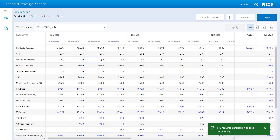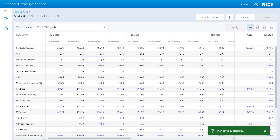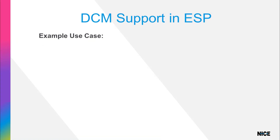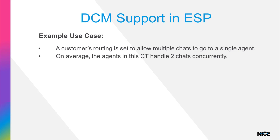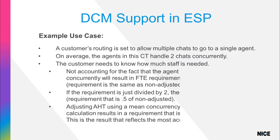Click Save or Save As to save all updates to the plan. With the new DCM support in ESP, you can change the mean concurrency for CTs and see how the changes affect staffing levels for individual CTs and entities in a plan. Here's an example use case: a customer's routing allows multiple chats to go to a single agent. On average, the agents in this CT handle two chats concurrently. The customer needs to know how much staff is needed. Setting the mean concurrency to 2 for the CT shows the result that reflects the most accurate staff needed.